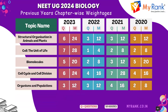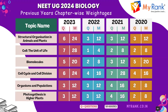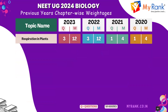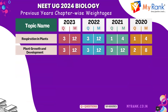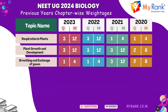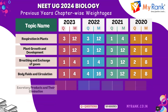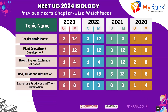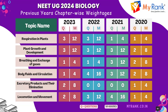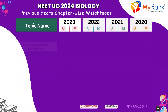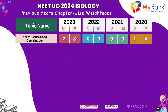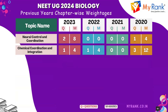Organisms and populations, photosynthesis in higher plants, respiration in plants, plant growth and development, breathing and exchange of gases, body fluids and circulation, excretory products and their elimination, locomotion and movement, neural control and coordination.